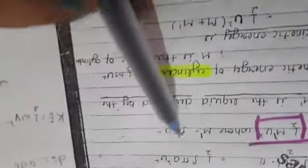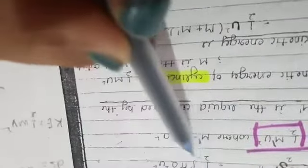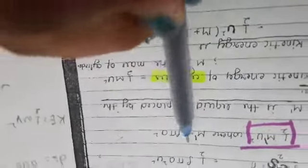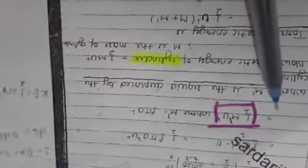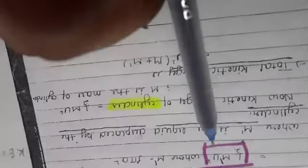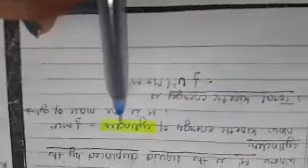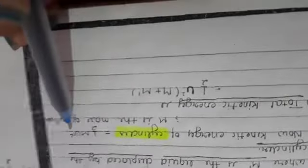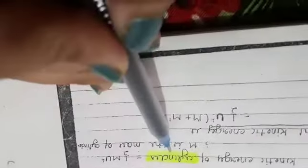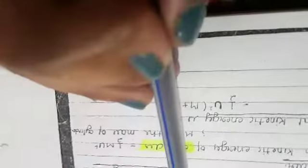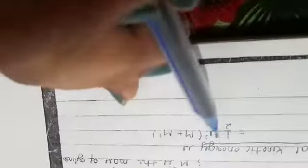This term cancels, and we define m' as the mass of liquid displaced by the cylinder. So the kinetic energy of the liquid is (1/2)m'u². The kinetic energy of the cylinder is (1/2)mu², where m is the mass of the cylinder.